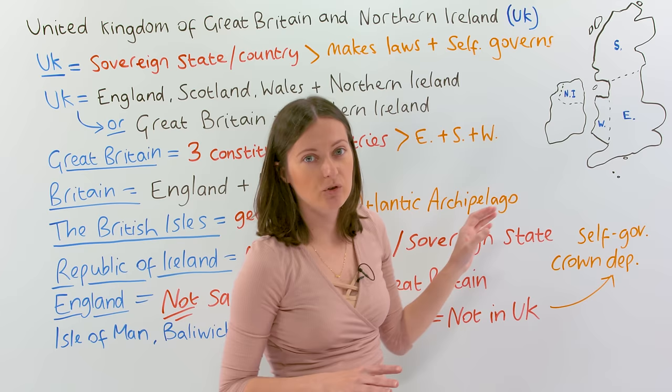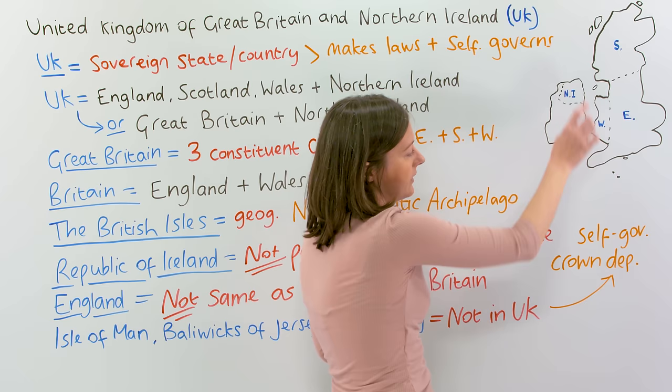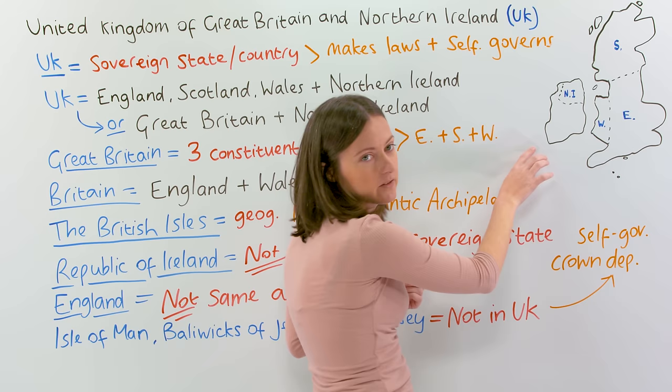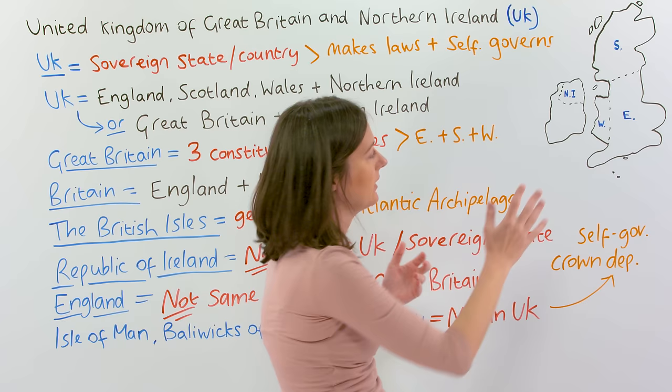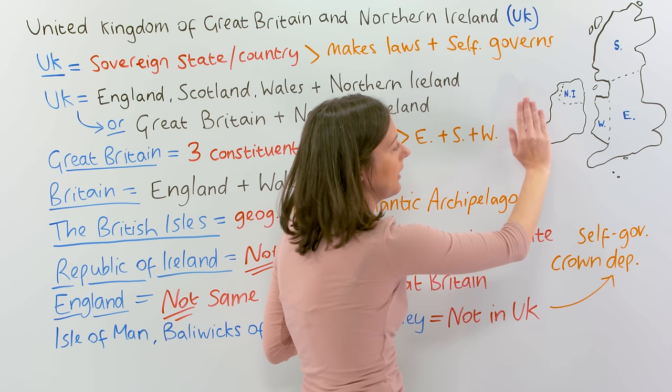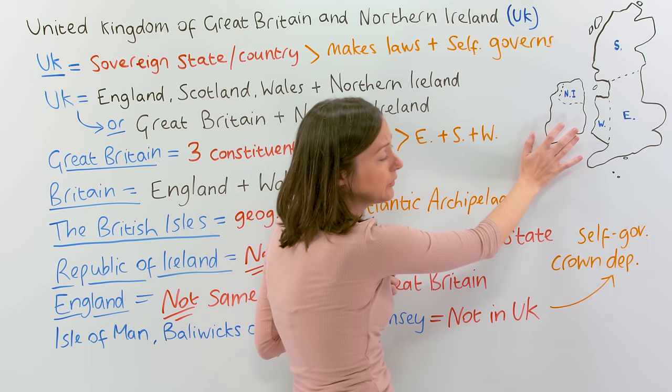And there are actually over 6,000 islands up in Scotland, some down here as well — many, many islands. But the trouble with the term 'British Isles' is that some people in Ireland don't like that term, because it makes it sound like Ireland is British, even though Ireland is independent — Ireland is a sovereign country by itself. So some people object to calling this the British Isles.